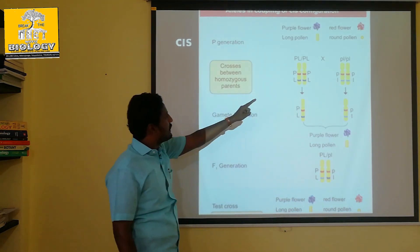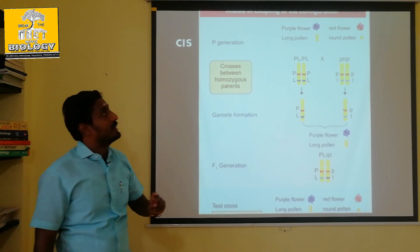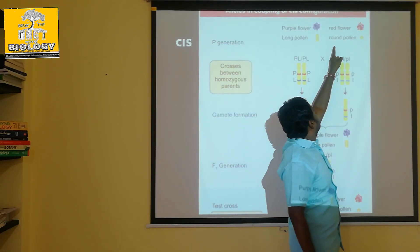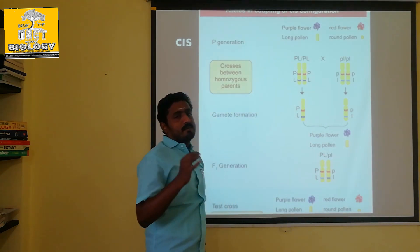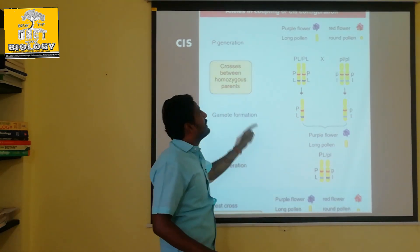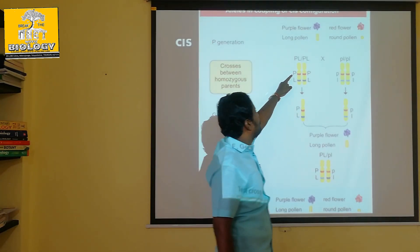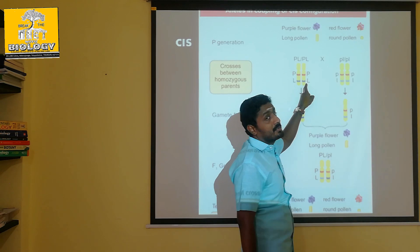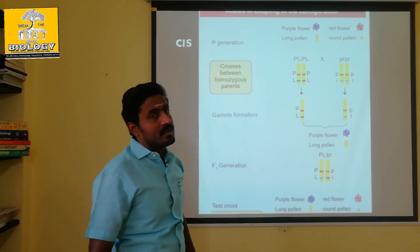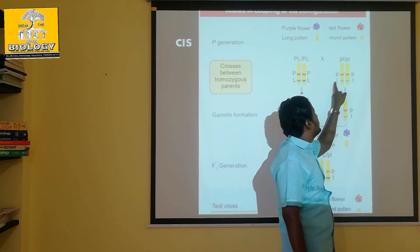This is a cross. It's a long flower plant crossed with a red flower round flower plant. So, who is the purple flower with long flower? P, L and P, L. If you look at the red flower as a long flower, it is a small flower.